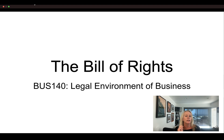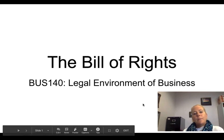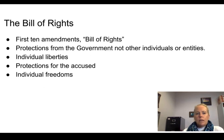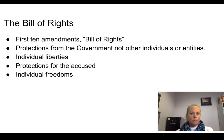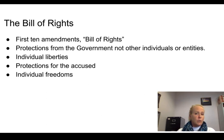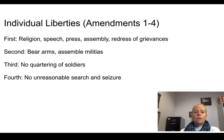Now we're going to talk about the bill of rights. The bill of rights are the first ten amendments to the constitution. They provide protections from the government — we're always talking about protections from the government, not individuals or entities. The bill of rights is designed to protect your individual liberties, provide protections for the accused, and guarantee some individual freedoms.